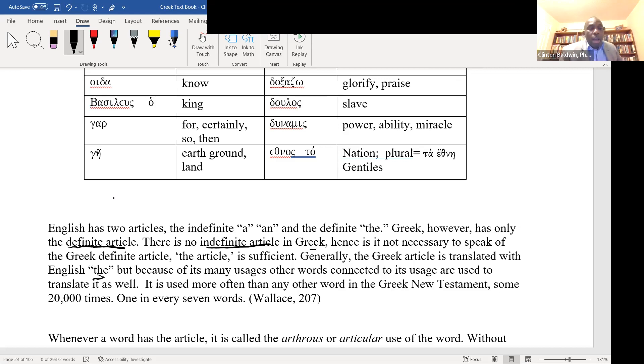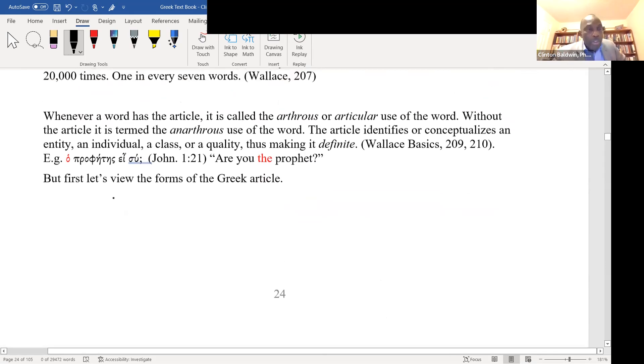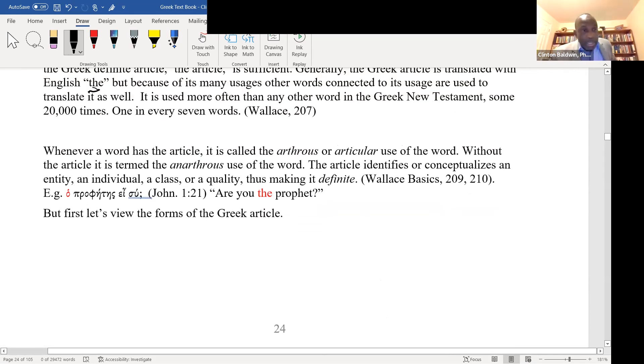The Greek article is translated with the English the, but because of its many usages, other words connected to its usage are used to translate it as well. It is used more often than any other word in the Greek New Testament, some 20,000 times, according to William Wallace.